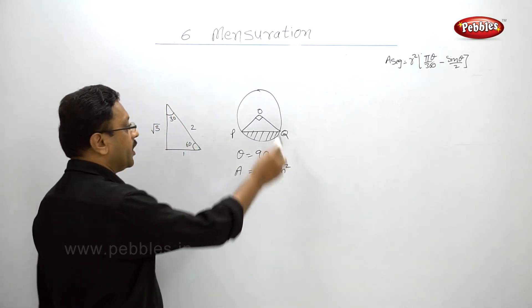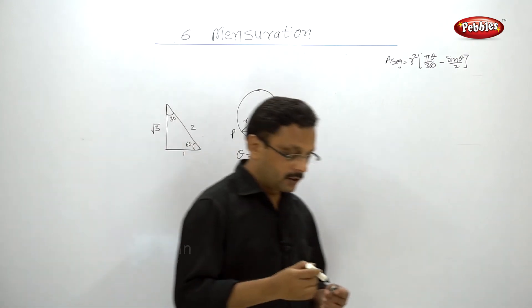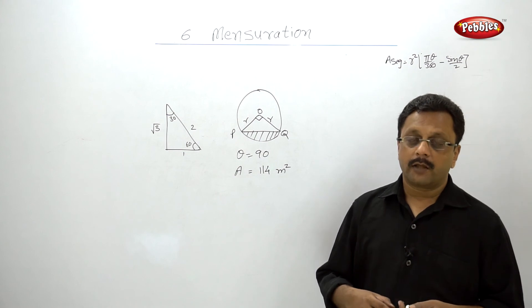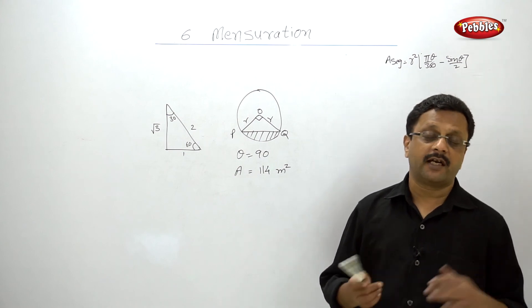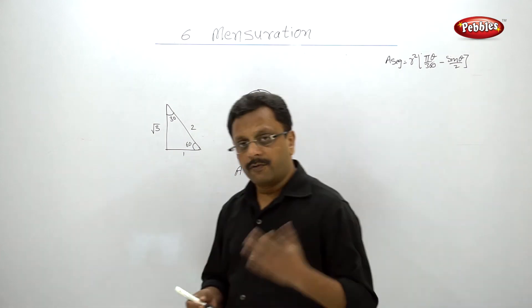Of course you have to find out the radius. This is again a direct substitution of formula. I hope that you remember what is sin 90 and cos 90. Very simple.